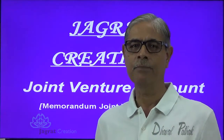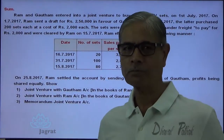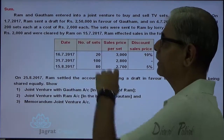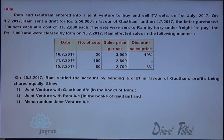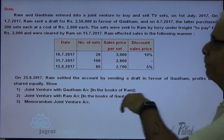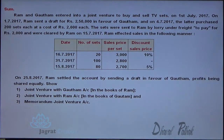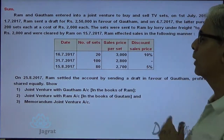Let me start with one sum. Ram and Gautam entered into a joint venture to buy and sell TV sets on 1st July 2017. On that date, Ram sent a draft of Rs. 2,50,000 in favour of Gautam. On 4th July 2017, Gautam purchased 200 sets at a cost of Rs. 2,000 each. The sets were sent to Ram by lorry under a freight of Rs. 2,000 and were cleared by Ram on 15th July 2017.